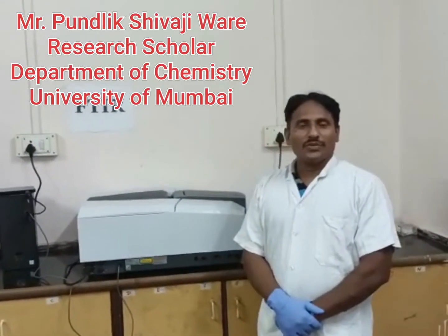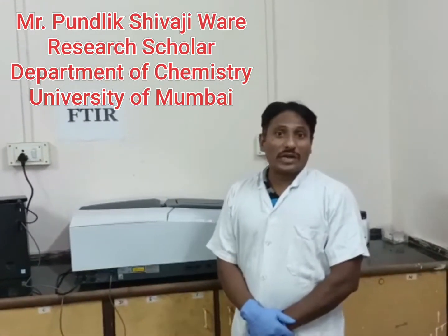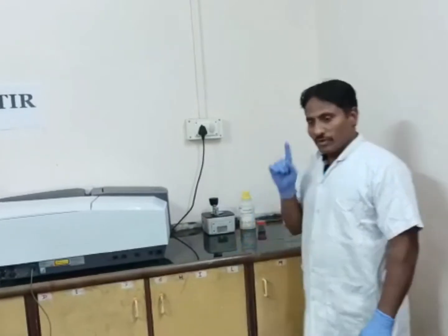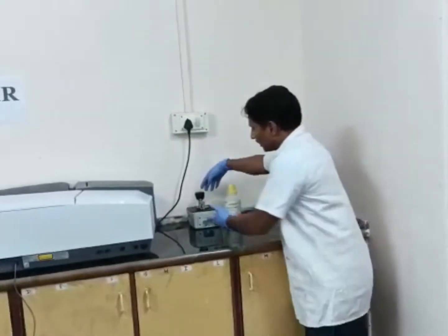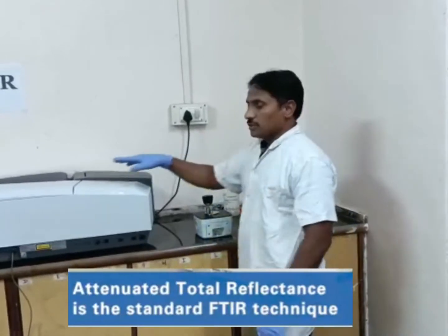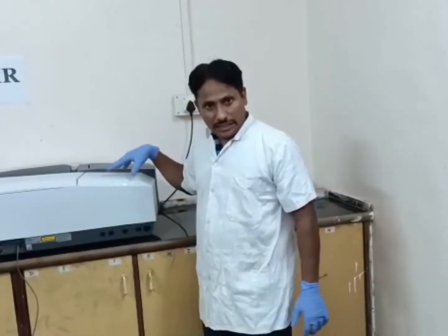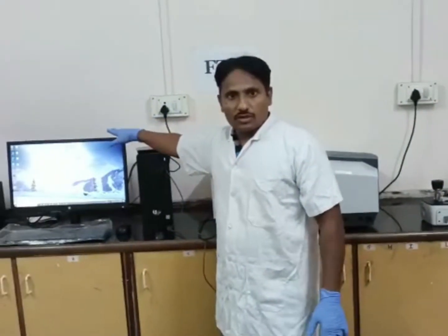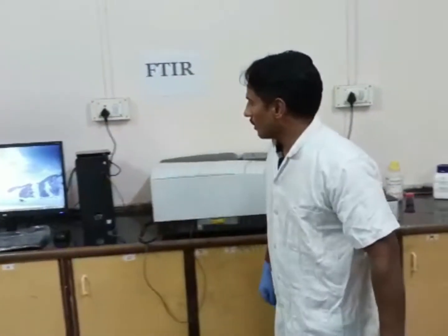Hello everyone, today we see FTIR spectrometer instrumentation. There are three important parts of this instrument: first is the ATR machine, called attenuated total reflectance; second is the IR source and detector; and third is the software installed inside the computer.